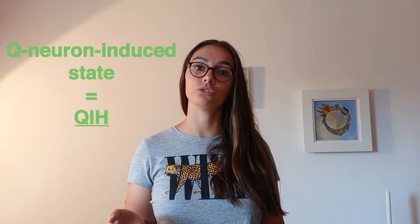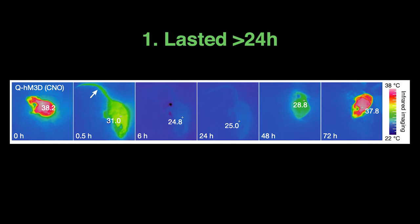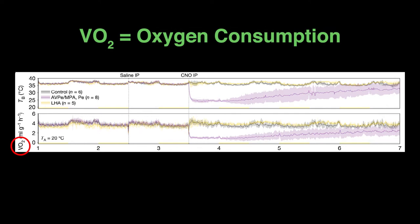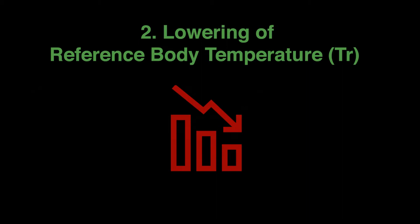Several key observations were made that showed QIH has a lot of similarities to hibernation. First of all, it lasted longer than 24 hours. As shown by infrared imaging, the body temperature dropped significantly after excitation of Q-neurons. In addition, oxygen consumption, which is seen as a measure of metabolic rate, also decreased. The second characteristic, also seen in hibernation, is the lowering of the reference body temperature, or TR.